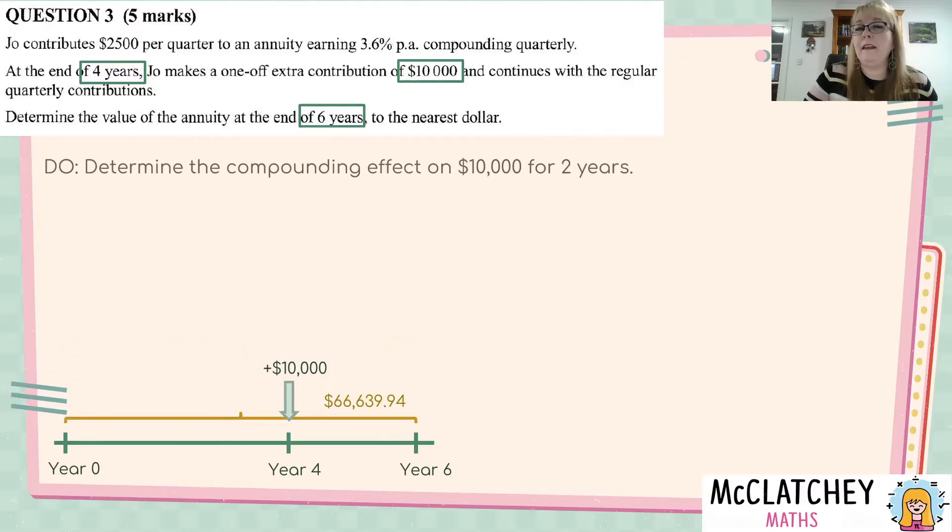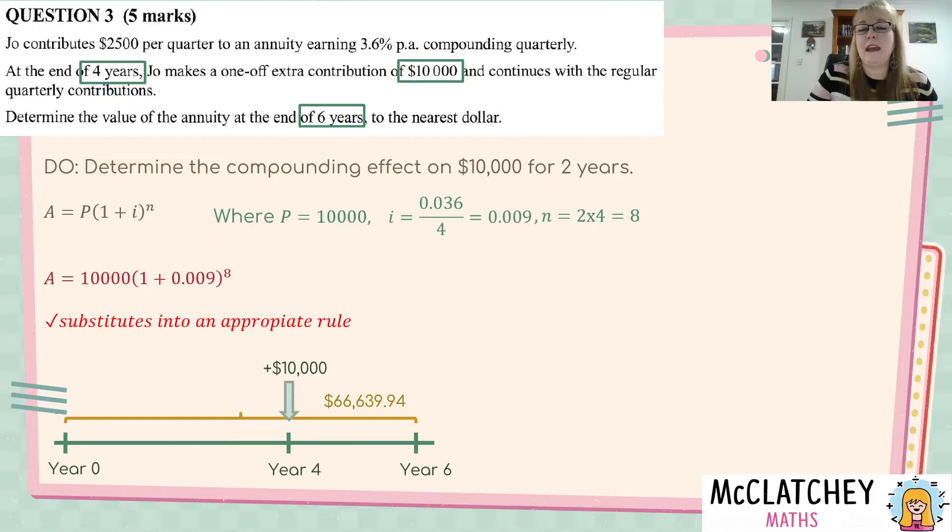Okay, now we need to work out the compounding effect on that extra contribution, the $10,000. And it's only in the bank for two years. So, we're going to use the regular compound interest formula. It's not an annuity. It's just a lump sum being compounded under the same terms. So, we've stated our formula. We've got the same variables, except the only thing that's really changed is our principal is $10,000. Interest rate remains the same as per the annuity. But our amount of time is eight periods because it's two years quarterly. So, let's substitute that into the formula. And we've earned our third mark now for substituting into the right rule.